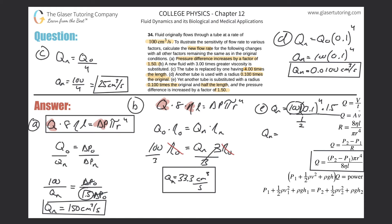And we get that the new flow rate is 0.03 cubic centimeters per second.